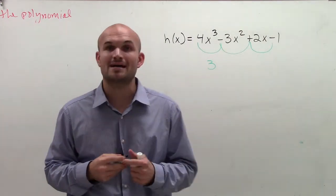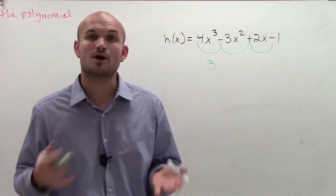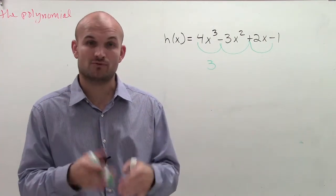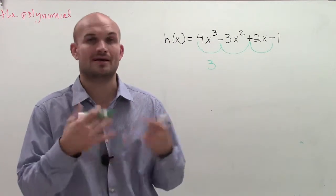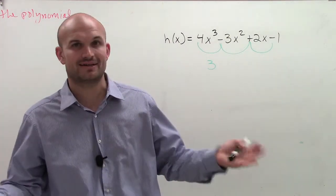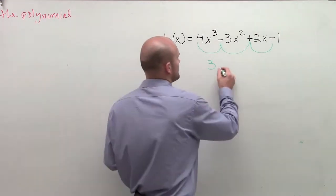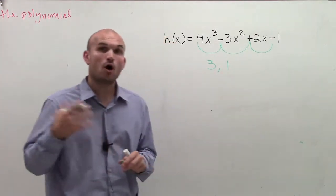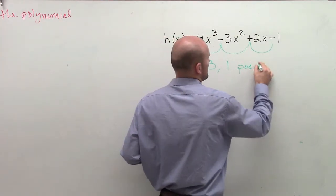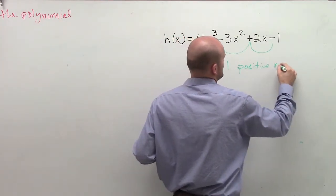So what that tells me is I have a possibility of three positive zeros, or minus an even integer, which would be minus 2, minus 4. I can only minus 2 from there. You can't have negative zeros. But if I minus 2, then I'm left with 1. So I either have 3 or 1 positive real zeros.